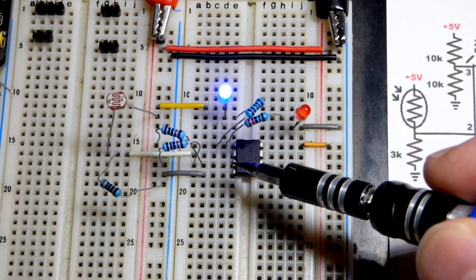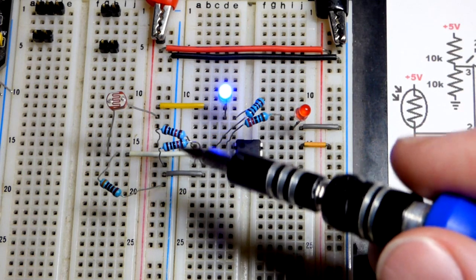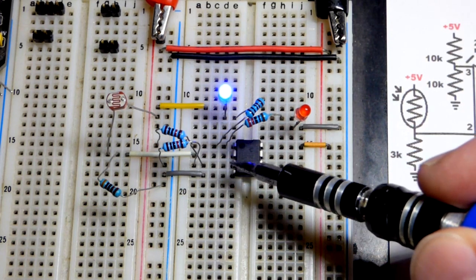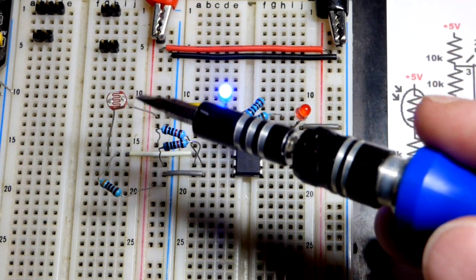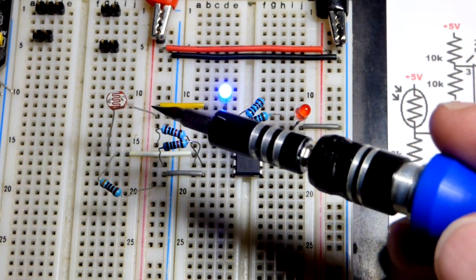We set our reference voltage to the non-inverting input at 2.5 volts using equal value resistors. We have a light dependent resistor voltage divider there. When enough light falls on the light dependent resistor, like it is now,